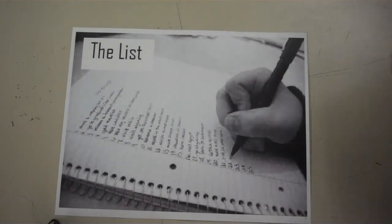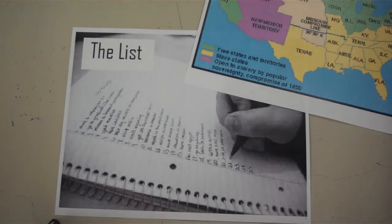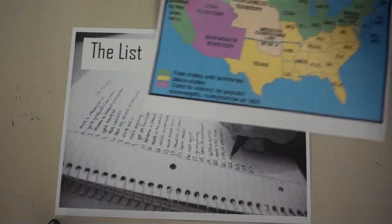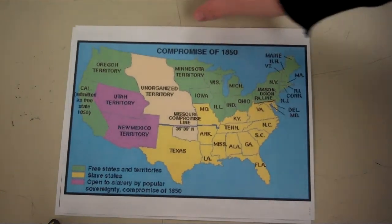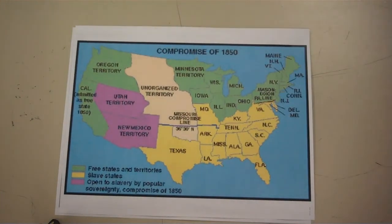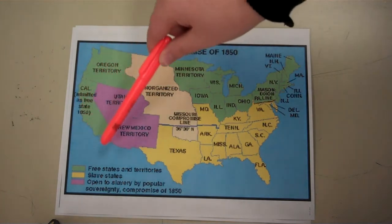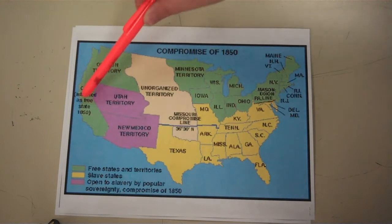Number 1: The Compromise of 1850. After the victory over Mexico in the U.S.-Mexican War, the United States gained a substantial amount of territory known as the Mexican Cession.